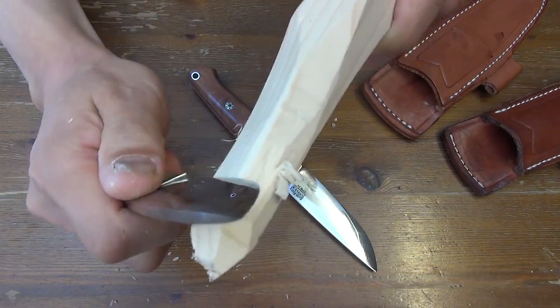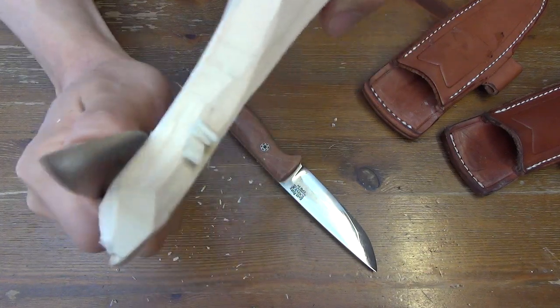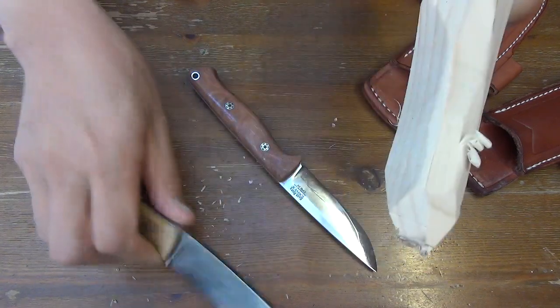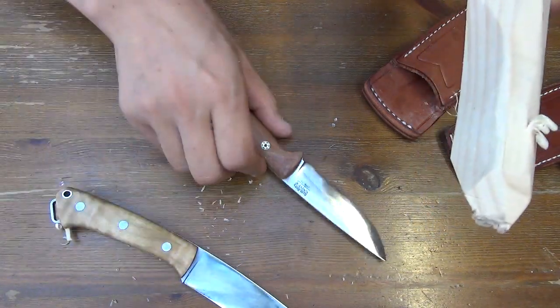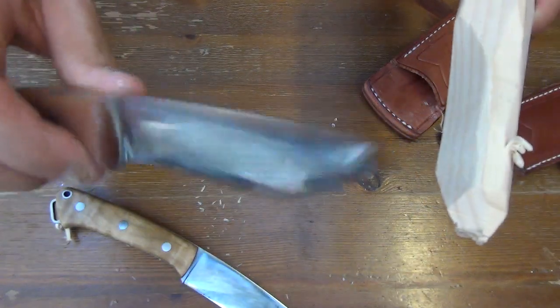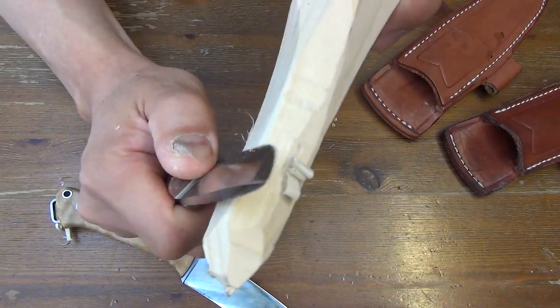But to slide on the bones, this shallow geometry is not very good. Better than V-edge, better than Skandy edge. But this right side, deep convex, is much much better.